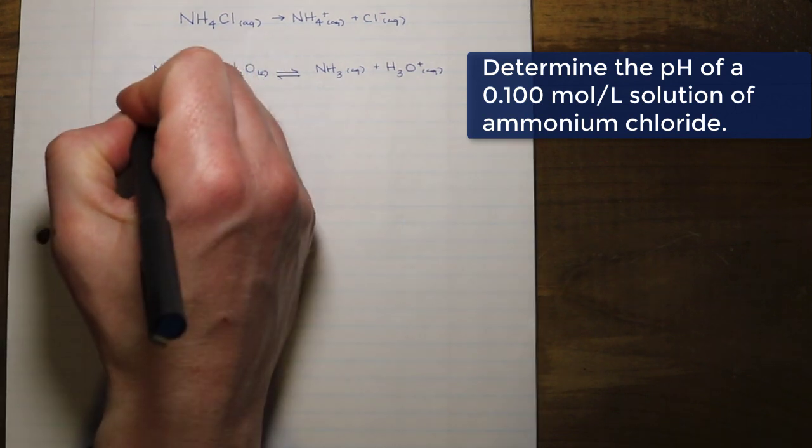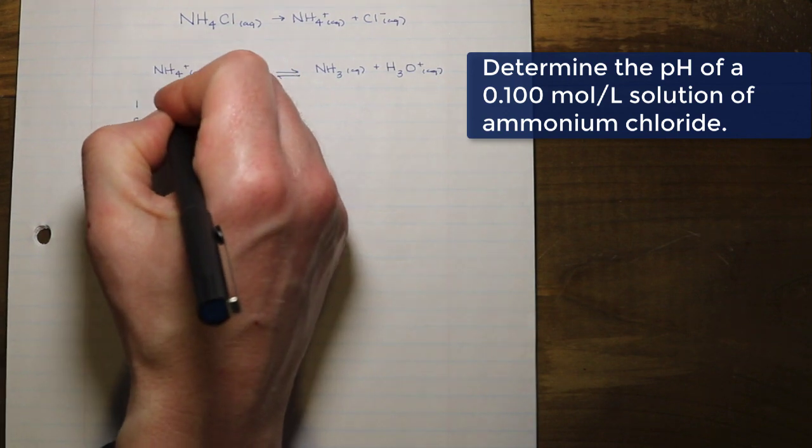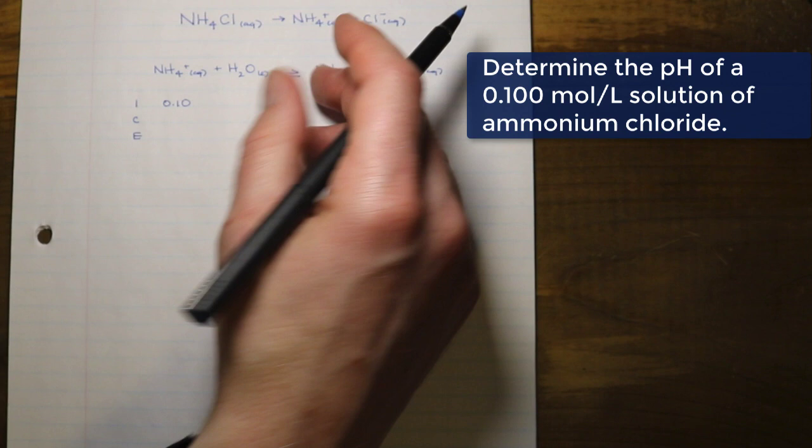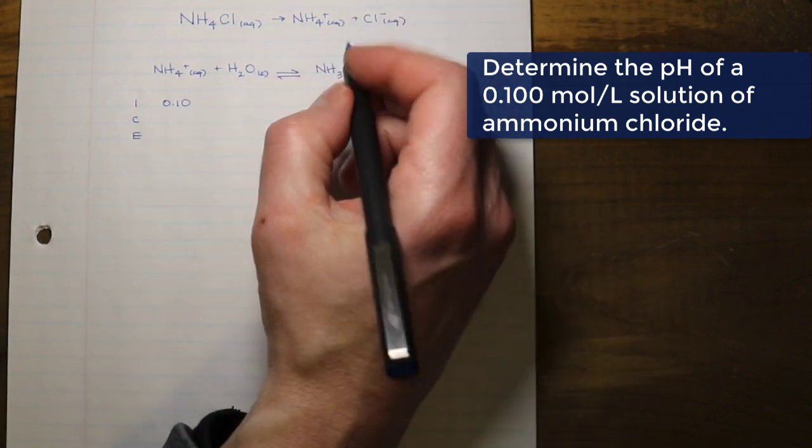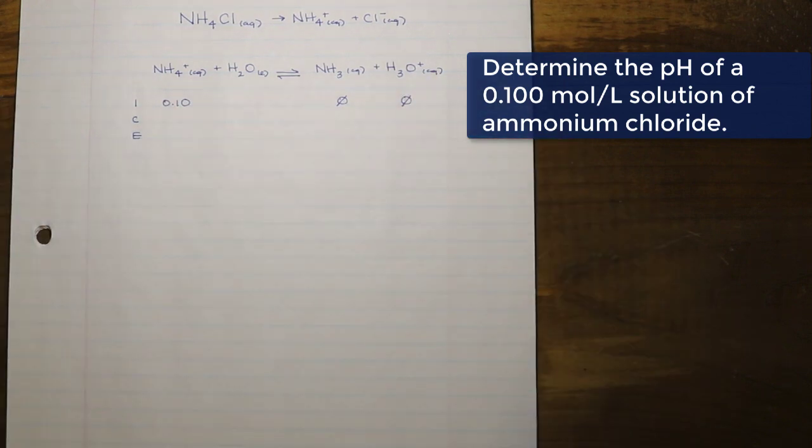Now we set this up as we do any other ICE table. The ammonium ion concentration is going to be 0.10. Remember the ammonium ion stems from the dissociation of the ammonium chloride in a one-to-one ratio. Now remember water, we're not going to count it here because there's just too much of it. The initial concentration of both of these product ions are going to be treated as zero.